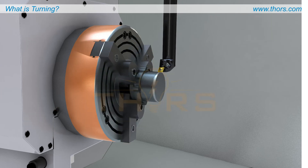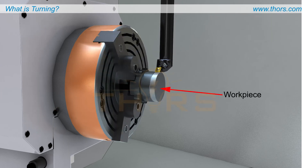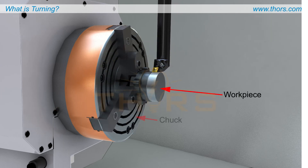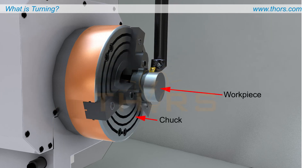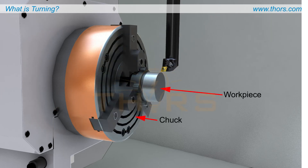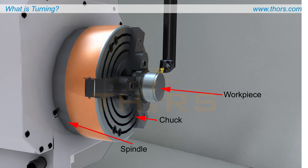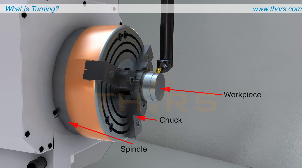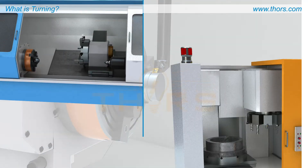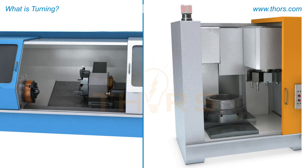In turning operations, a workpiece is held in a device called a chuck which rotates on a spindle. The spindle can be oriented vertically or horizontally depending on the size and shape of the part.